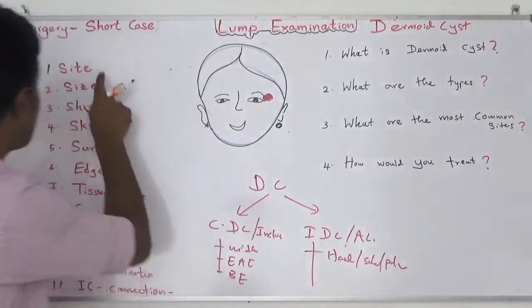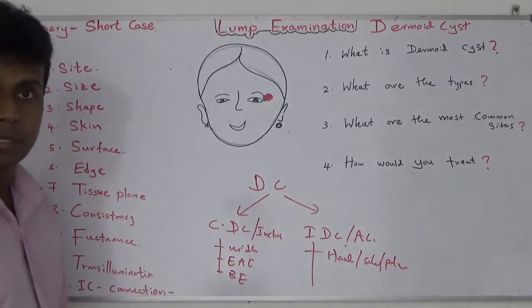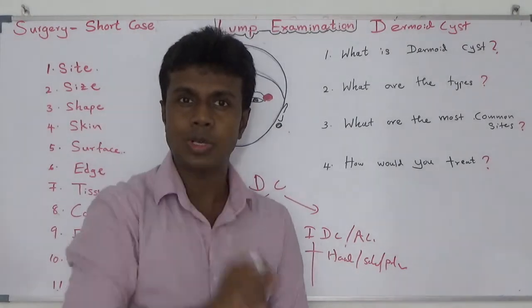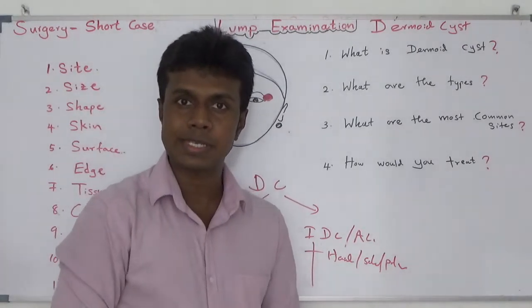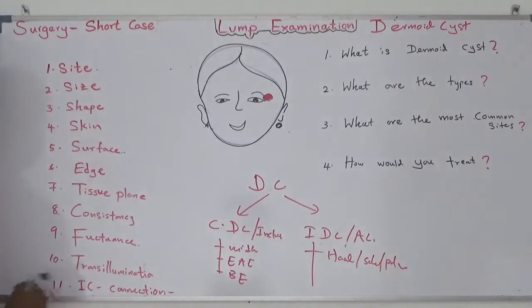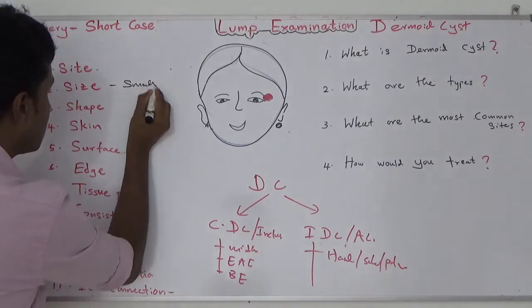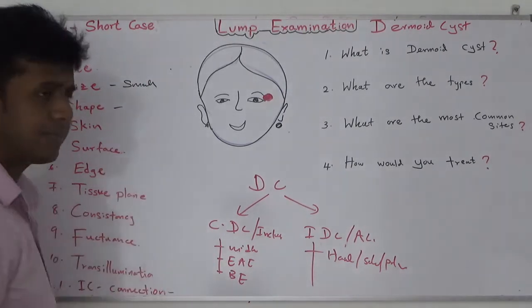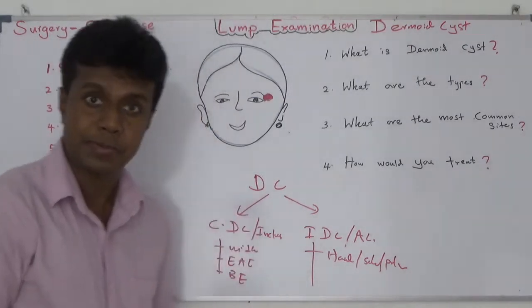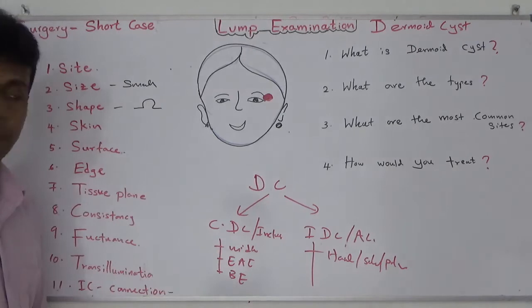Now you know the common sites. Next, consider the size — dermoid cysts are usually small in size. The shape is rounded or hemispherical.